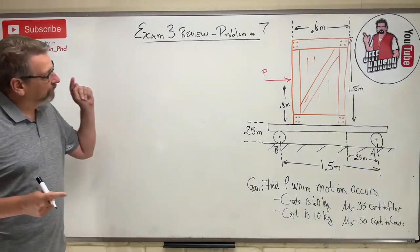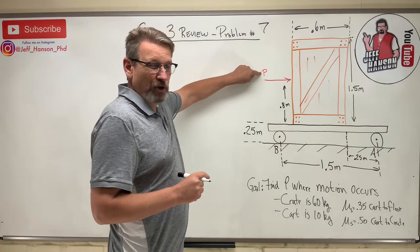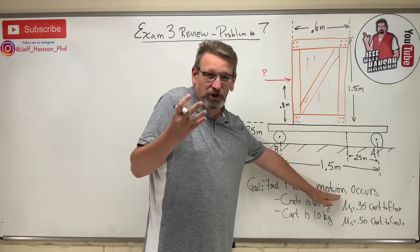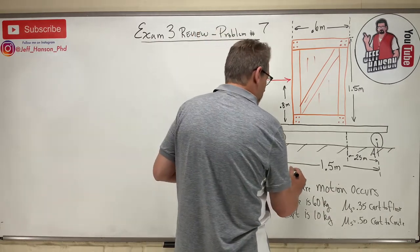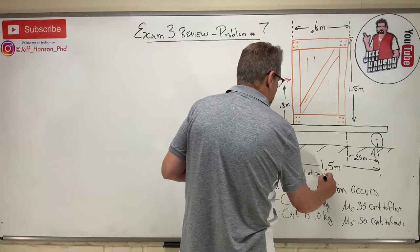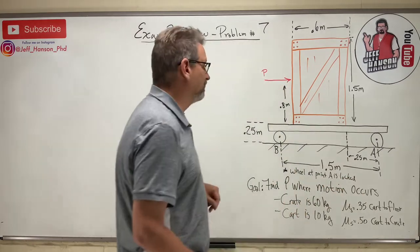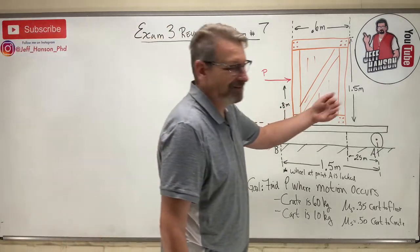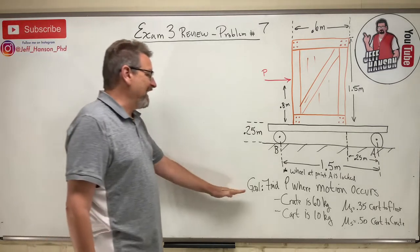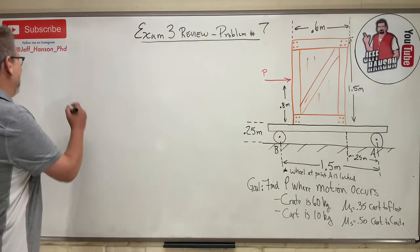Okay, another exam review problem — this is problem number seven. Find the force P where motion occurs. The back wheel at point A is locked, meaning it has a brake on it, so when you push on it, it doesn't slide away. So what does 'find P where motion occurs' mean? What does 'motion occurs' mean?